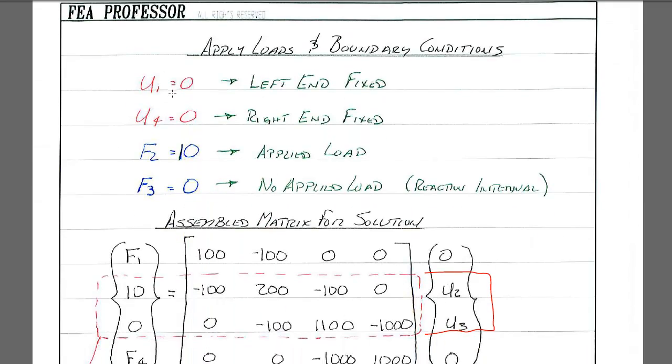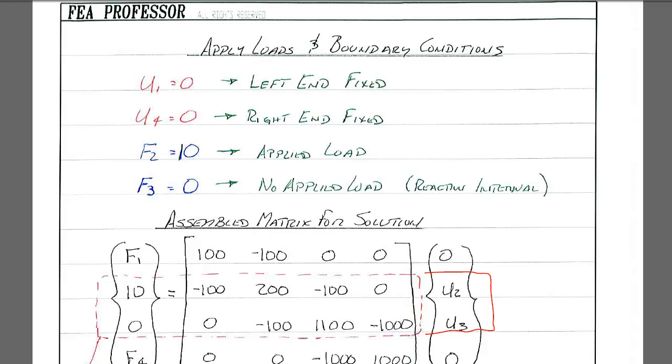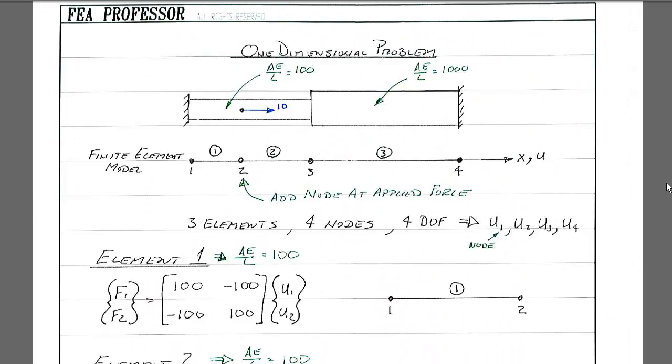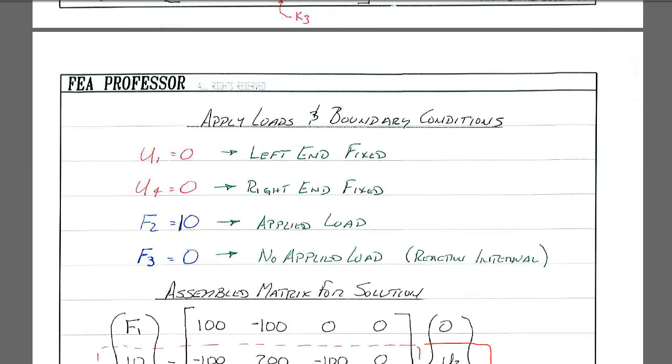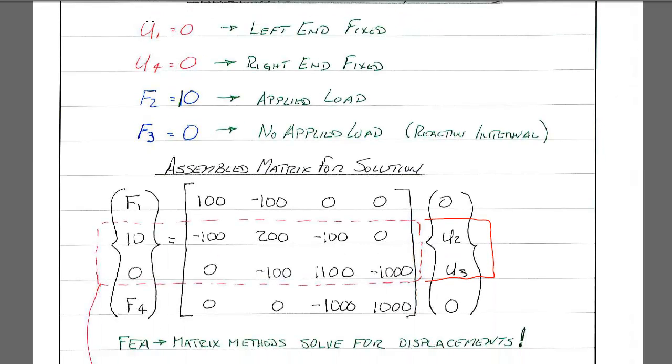So now let's apply the loads. We can see that from before, we had 0 displacement at u1, we had 0 displacement at u4, and we had a load of 10 at node 2. That's consistent with what we have here. And so we take the assembled matrix. Now we add up those numbers to come up with the assembled matrix. And we knew that f2 was equal to 10, f3, there wasn't any load there. And we knew that displacement u1 and u4 were 0.